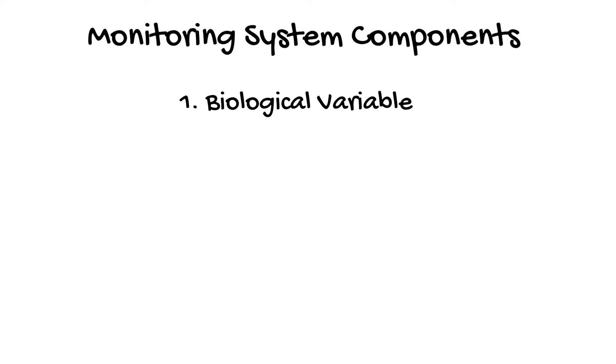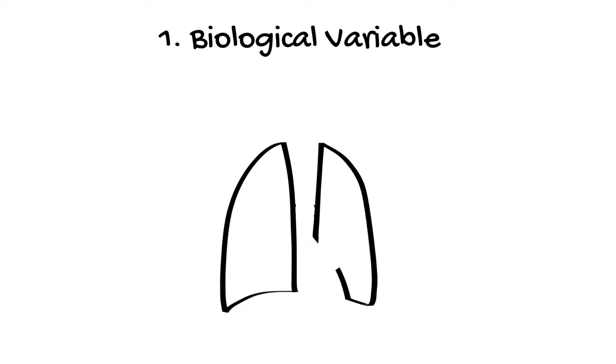We will look at this monitoring device in the familiar format of: 1. Biological Variable, 2. Sensor, 3. Integrator, and 4. Output. To start with, the biological variable being measured is the partial pressure of carbon dioxide in expired gas.